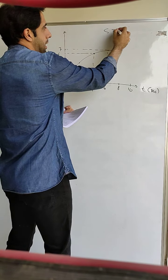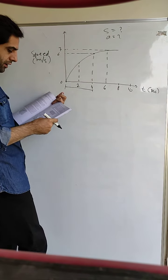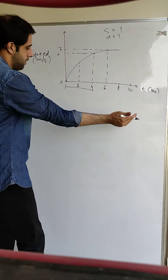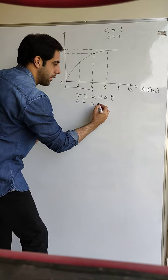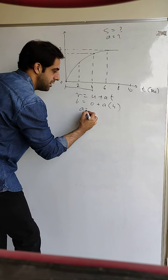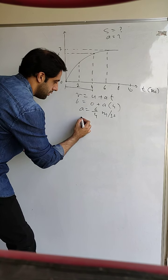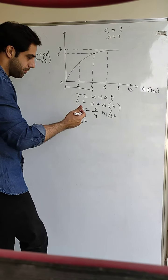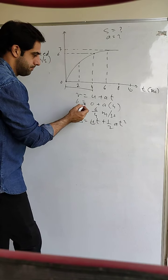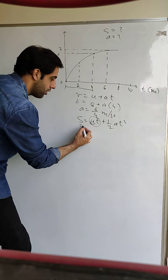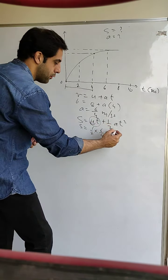We need to find distance s at the end of four seconds. Using the first equation v = u + at: final velocity is 6, initial velocity is 0, time is 4 seconds, so acceleration = 6/4 meters per second squared. Using the second equation s = ut + ½at²: u is zero so that term vanishes. We get s = ½ × (6/4) × 4² = ½ × 1.5 × 16 = 12 meters.